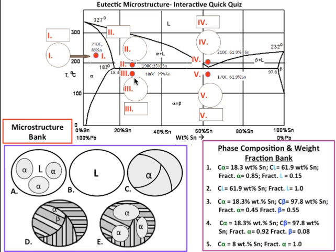Here's question 5, at the point 180 degrees Celsius and 25% Sn, which would be at Roman numeral 3 — this red dot right there — what is the phase composition and weight fraction? Your answer would go in this box here, and your choices are 1, 2, 3, 4, and 5.